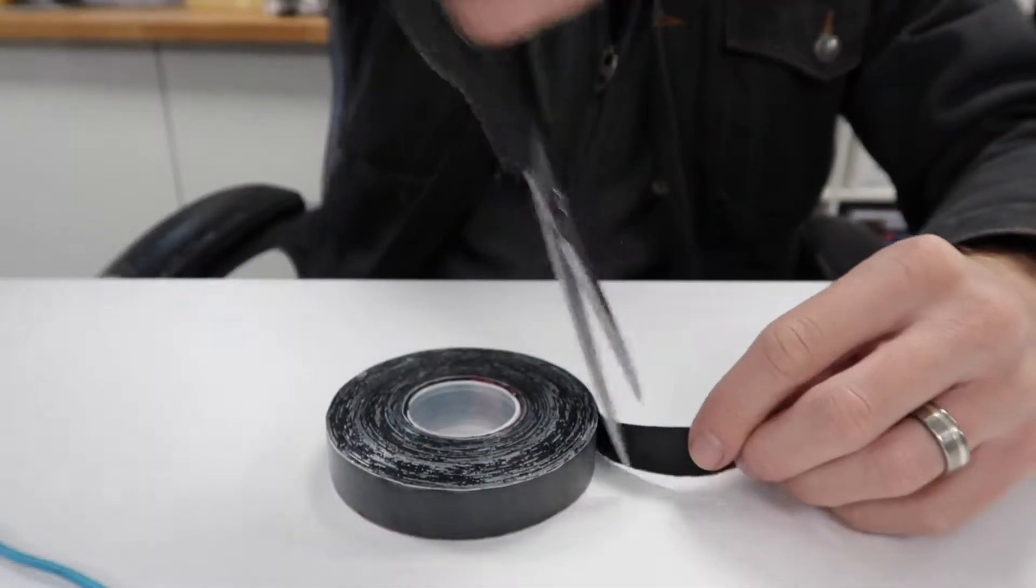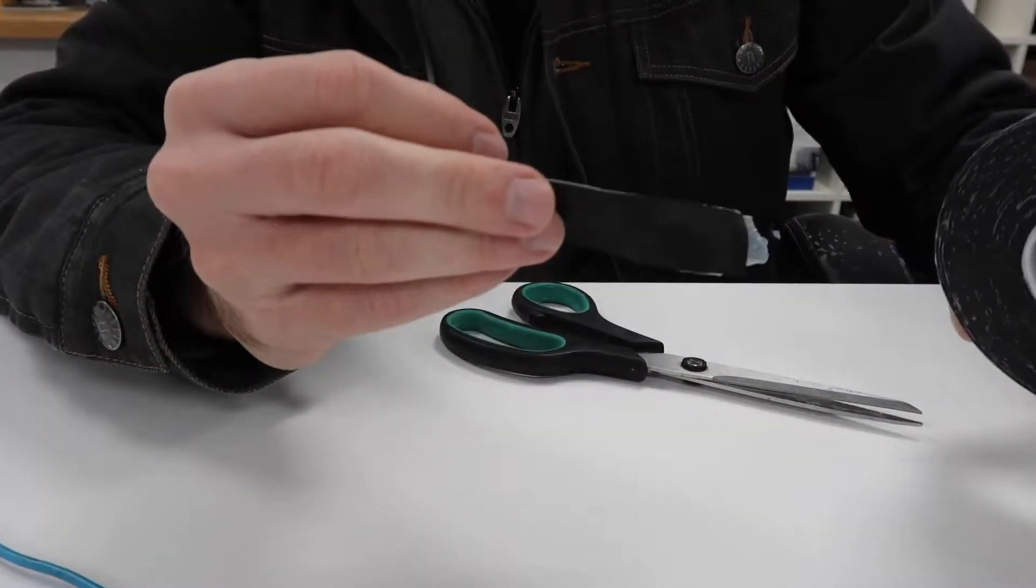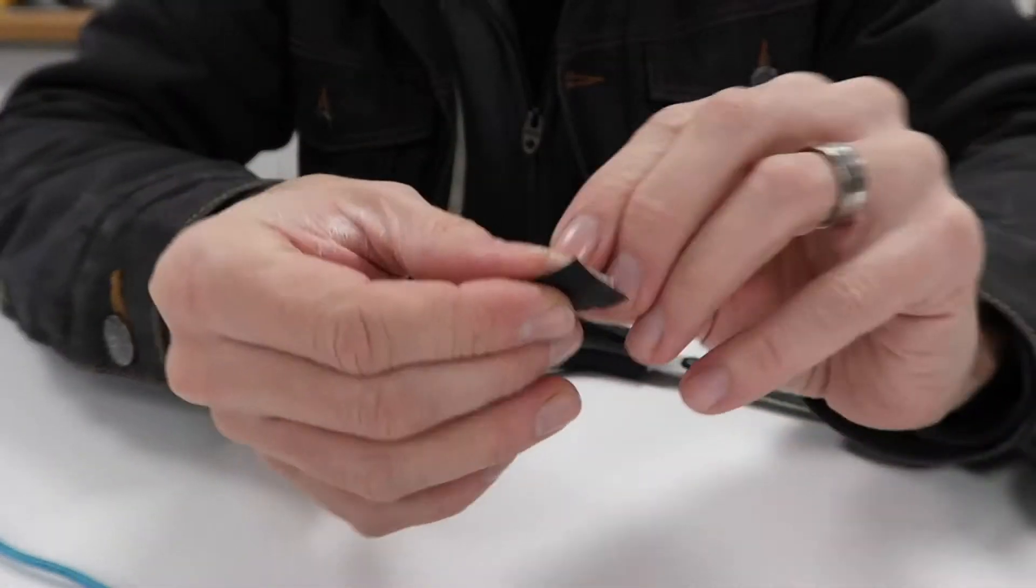I'm going to show you how to use it right now. Cut a small amount of this tape. It's got a cover on one side you can see here that peels off.